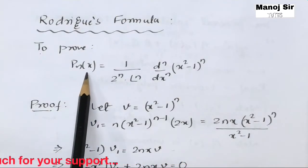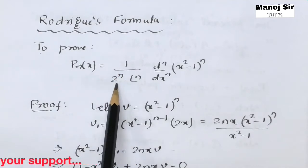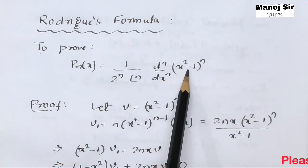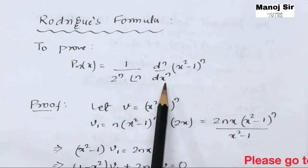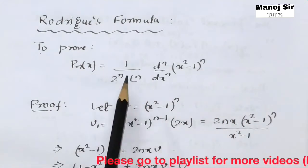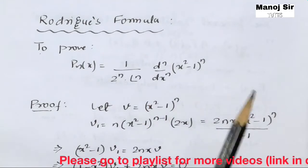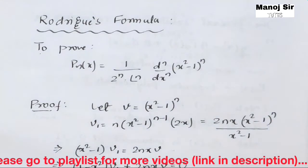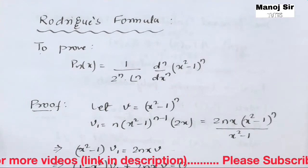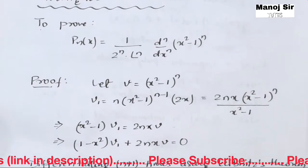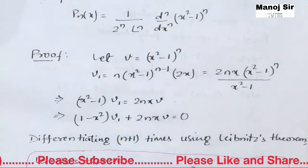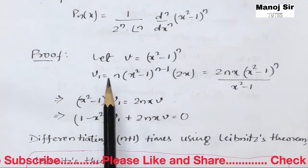In this formula we need to prove that Pn(x) equals 1 upon 2^n into n! times the n-th differentiation of (x²−1)^n with respect to x. We will prove this and I will be telling you each and every basic step while solving this.